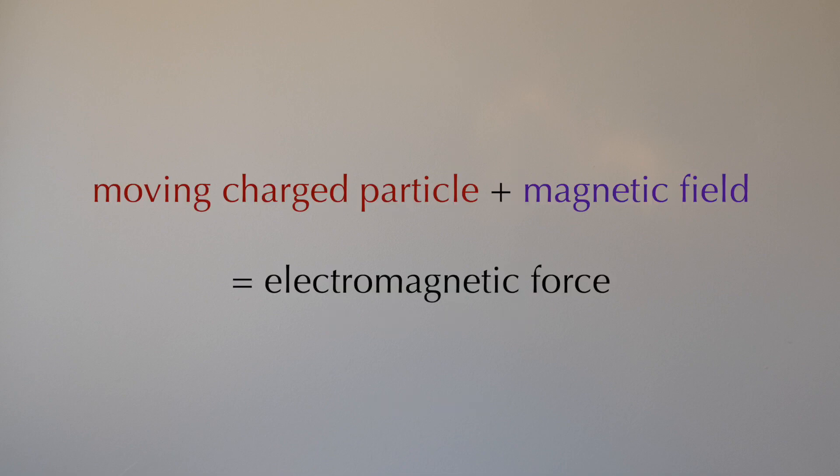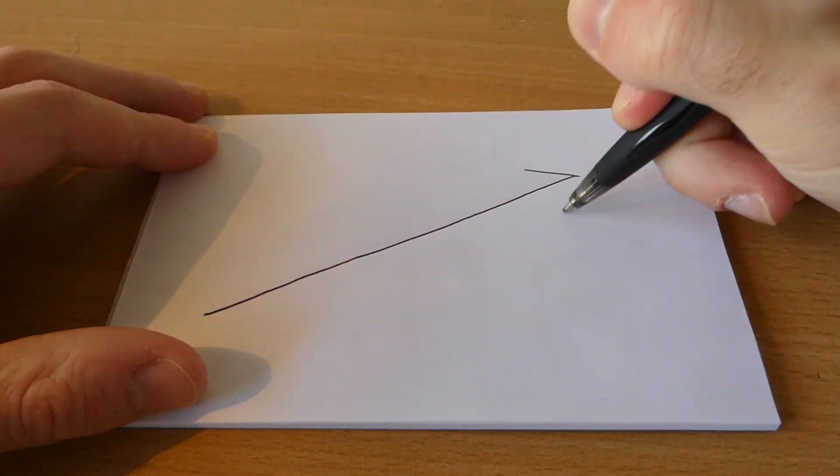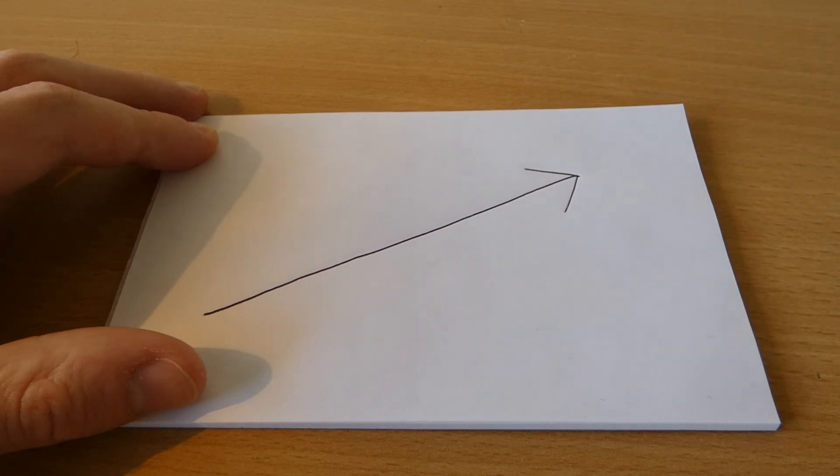Today we are going to focus on that force, and specifically how to find the direction it is applied in. You should already know that a force can be drawn as a special kind of arrow called a vector. It has a certain size and a certain direction.